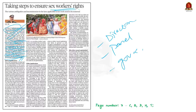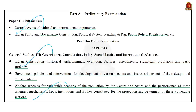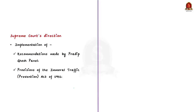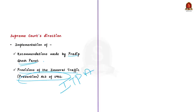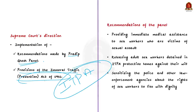The syllabus relevant to this article is highlighted for reference. The court directed the government to implement the recommendations of the panel and also to implement the provisions of the Immoral Traffic Prevention Act of 1956. The recommendations include: providing immediate medical assistance to sex workers who are victims of sexual assault — note that there is a provision available in the CrPC on providing such medical assistance.